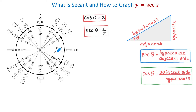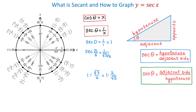We can start with the angle of 0, and at this angle x equals 1. Then secant of 0 equals 1 over 1, which is 1. Continuing with the angle pi over 6, if we rewrite this as 1 divided by square root of 3 over 2, then this equals 1 times 2 over square root of 3 — dividing by a fraction is the same as multiplying by its reciprocal — giving us 2 over square root of 3, which is approximately 1.15.